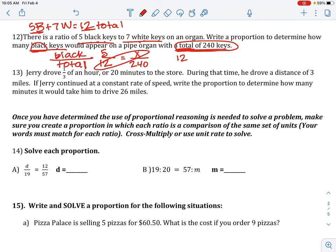12 times x is 12x equals 5 times 240 is 1200. Divide that out, and you get x equals 100 or 100 black keys as your answer.